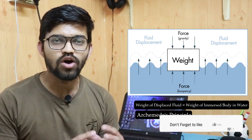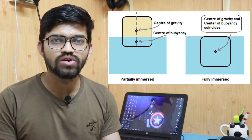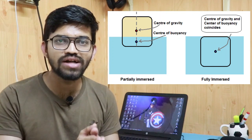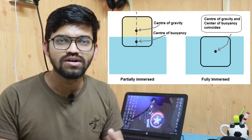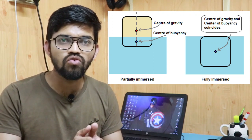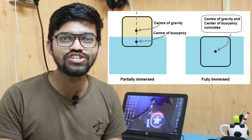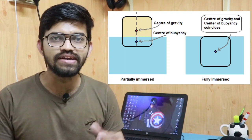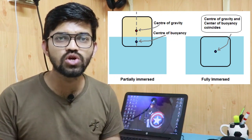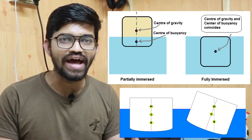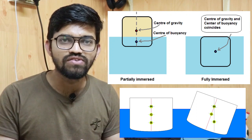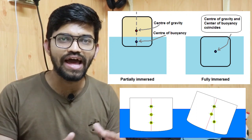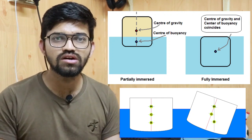Now let's talk about the center of buoyancy. When a body is partially immersed in water — as you can see in this image — the center of buoyancy will be exactly below the center of gravity. If the body is fully immersed with height h, the center of buoyancy is the point upon which the resultant buoyant force acts. It varies depending on whether the body is partially or fully immersed and the angle relative to the liquid surface.